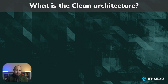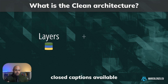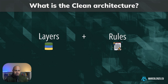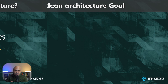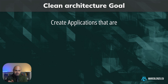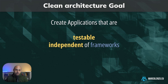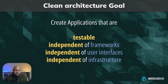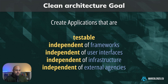In simple terms, the clean architecture defines a set of layers and rules we should use when coding a software application. Its goal is to create applications that can be developed and tested in isolation — applications that are independent of frameworks, user interfaces, infrastructure, or any other external service.